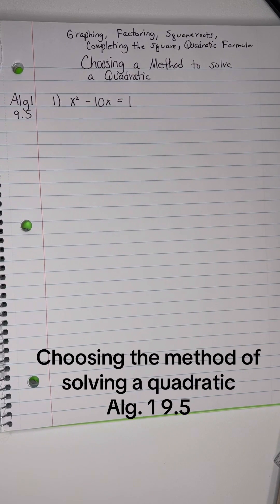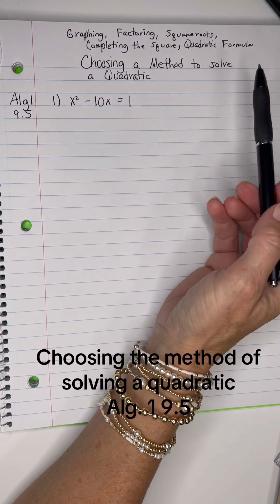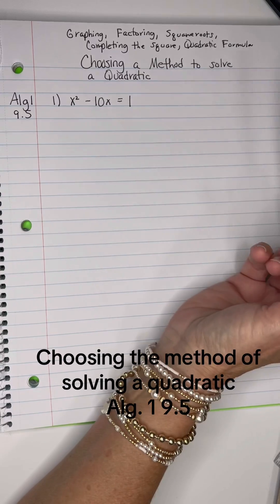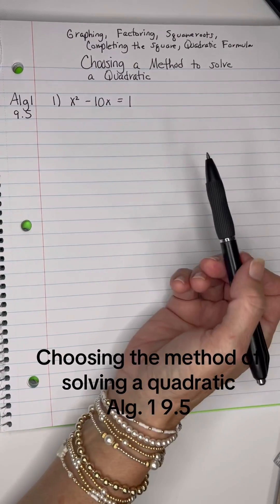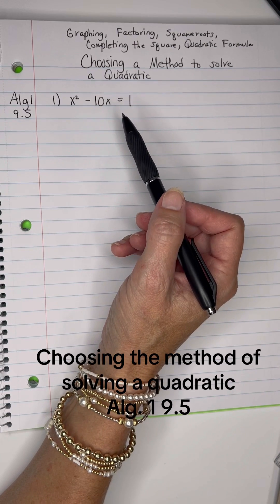On the next several problems, let's decide which would be the best method to solve the quadratic. We know that we've studied graphing, factoring, square roots, completing the square, and the quadratic formula, and we have this problem right here. Now I know maybe the favorite way to do it would be factoring.